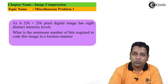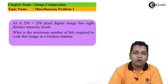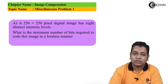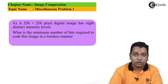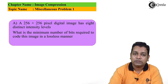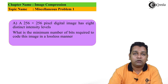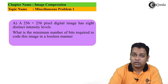Part A has the statement: a 256 by 256 pixel digital image has eight distinct intensity levels. What is the minimum number of bits required to code this image in a lossless manner? The word lossless is very important as we are working in the chapter image compression — we don't want any information content to be lost.